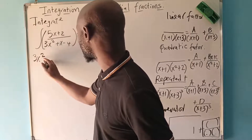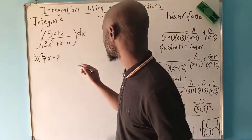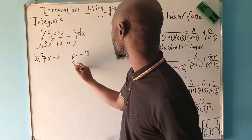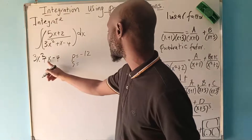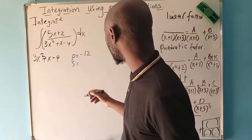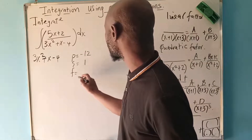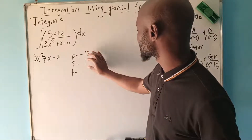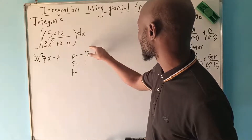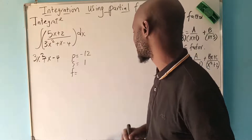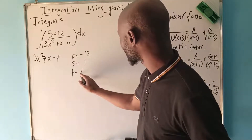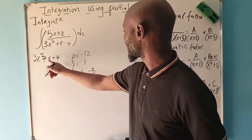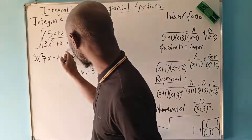We factorize 3x squared plus x minus 4. The product of the outer factors a times c gives negative 12, and the sum must equal the coefficient of x, which is 1. We look for two numbers which when multiplied give negative 12 and when added give 1 — clearly that is 4 and negative 3. So we replace the middle term: 3x squared minus 3x plus 4x minus 4.